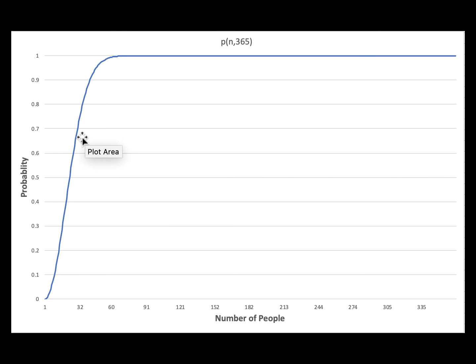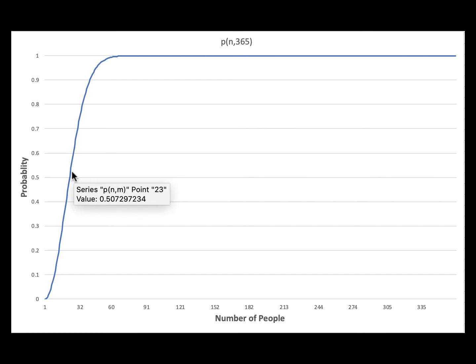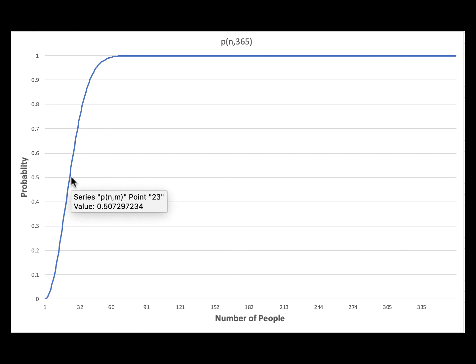It may surprise you — you might think that with 70 people the probability of sharing a birthday should be really low. But as we calculated, the probability of collision is high, and the same concept applies to hashing. Even with 365 spots in our hash table and only 20 numbers, the probability of collision is about 40 percent. With 23 numbers it's about 50 percent — a high number. Next we're going to talk about open hashing and closed hashing.